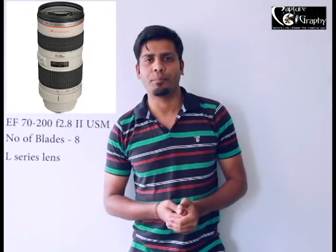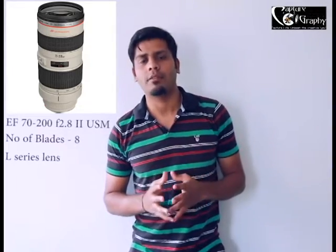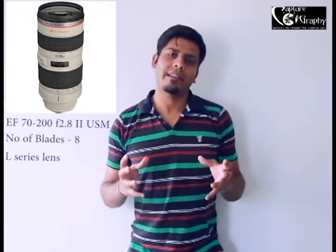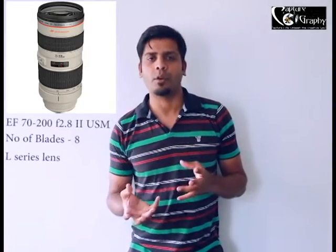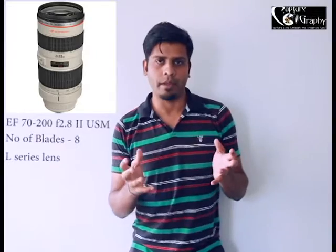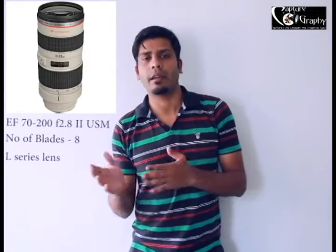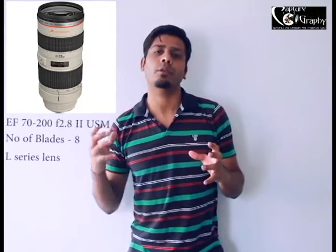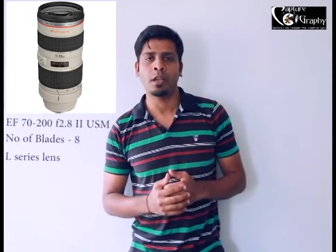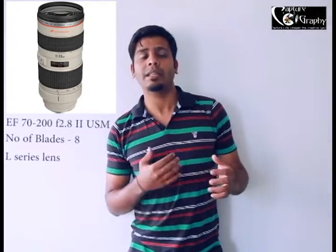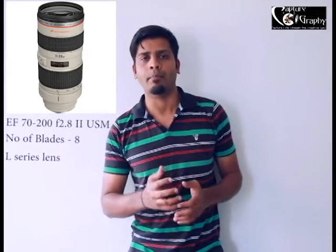The Canon 70-200mm f2.8 L series USM is a must-have lens for any portrait, fashion, or journalism photographer. This lens has ultrasonic motors in it and has been built with 8 blades and 8 diaphragms, giving you very sharp images. Because of the low aperture number of f2.8, it can be used under very low light conditions. When used with a crop sensor camera body, the focal length will reach up to close to 300mm.